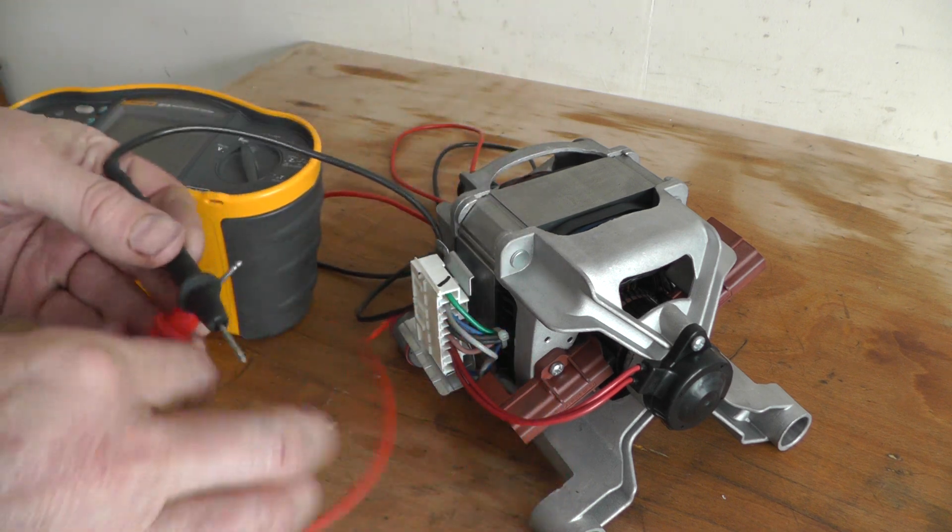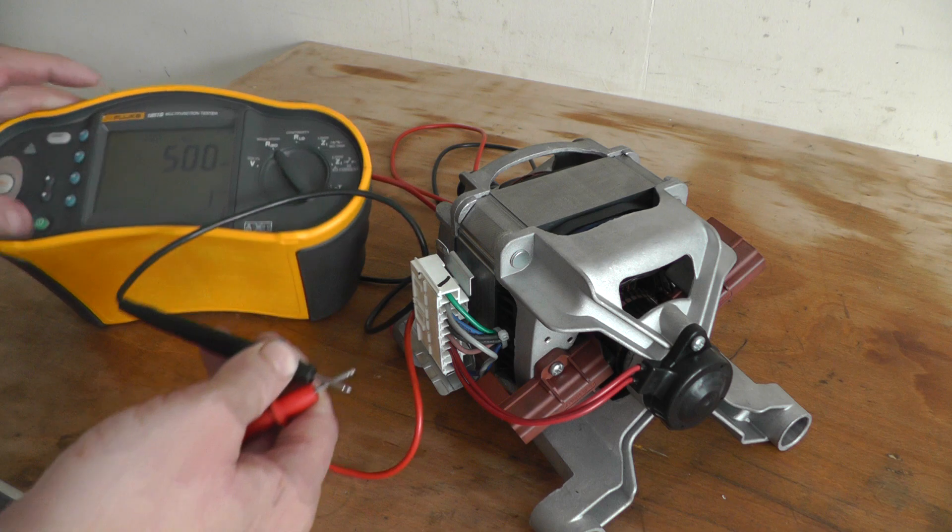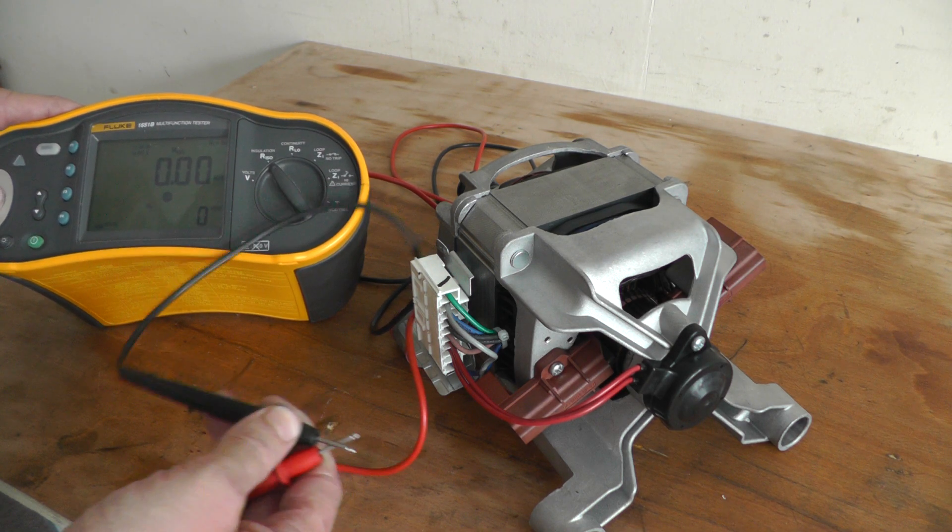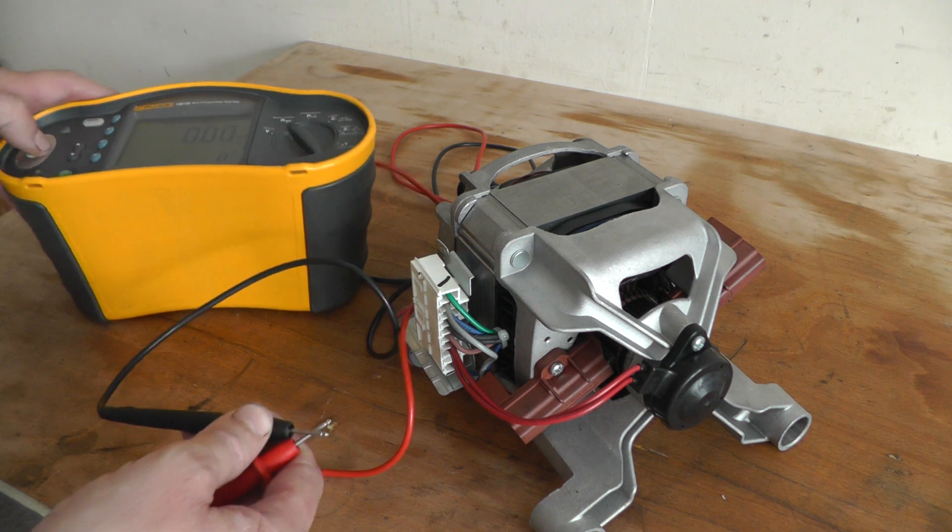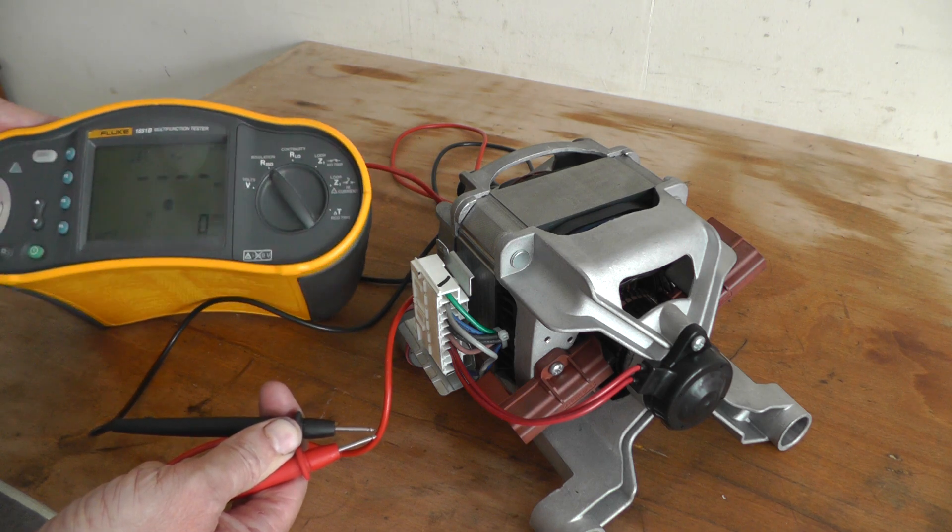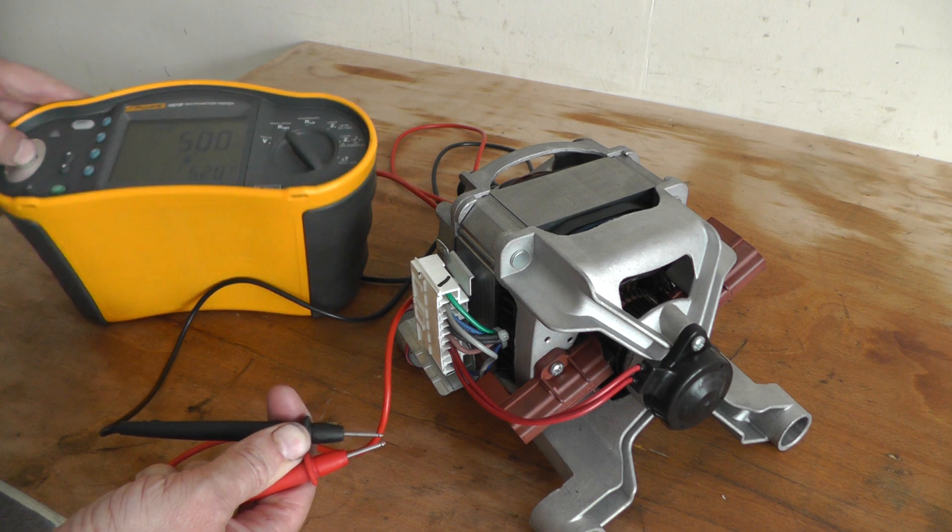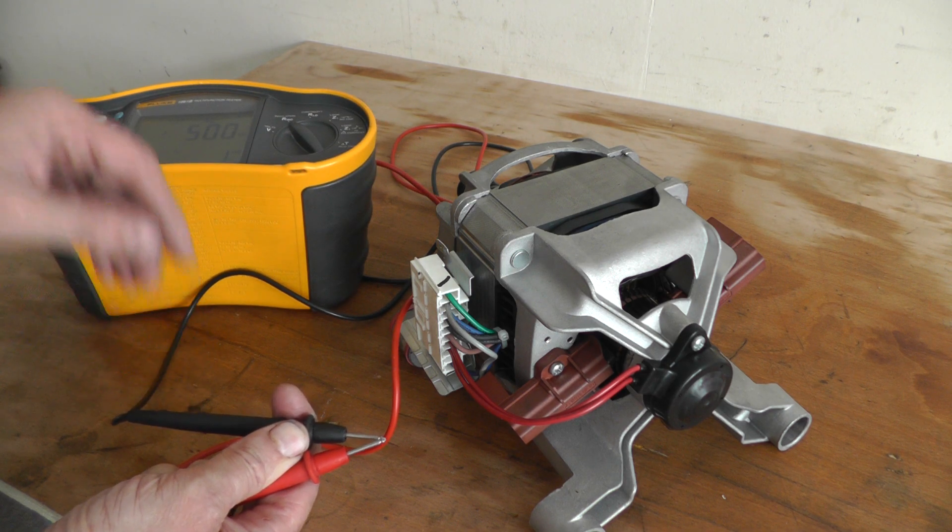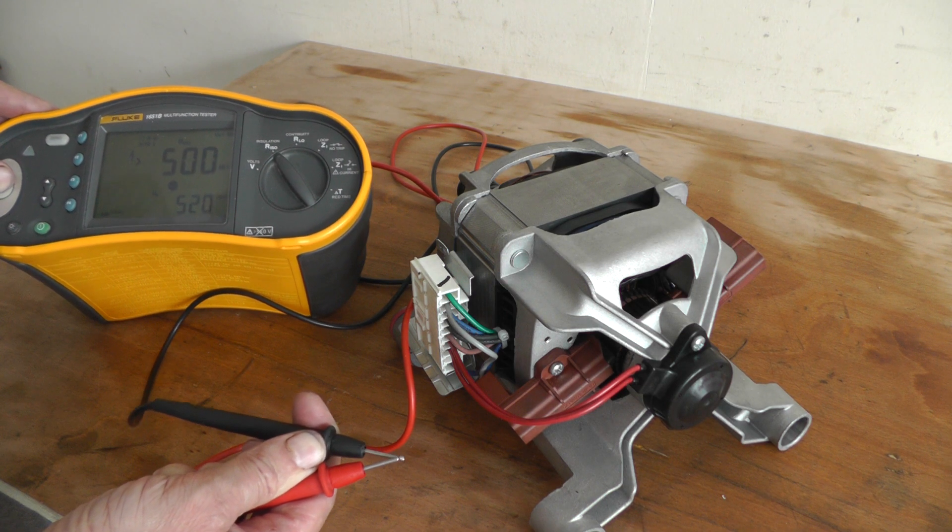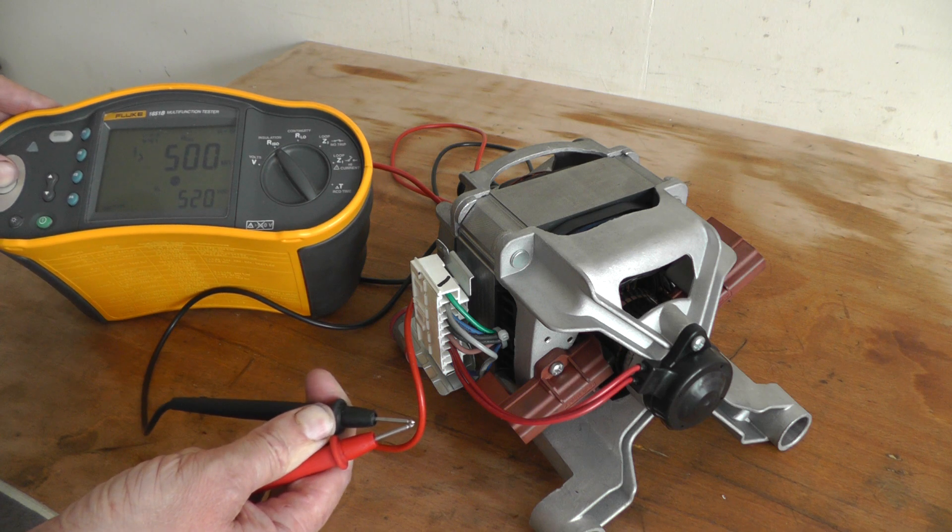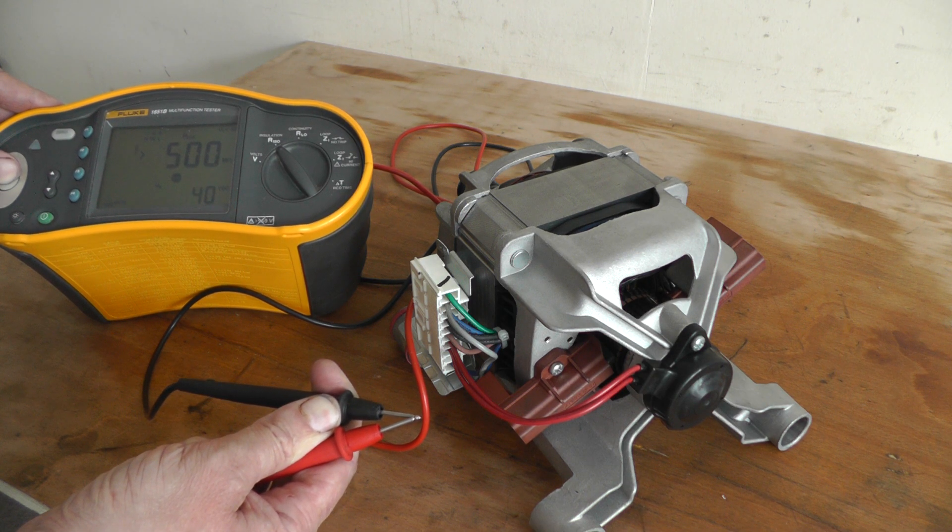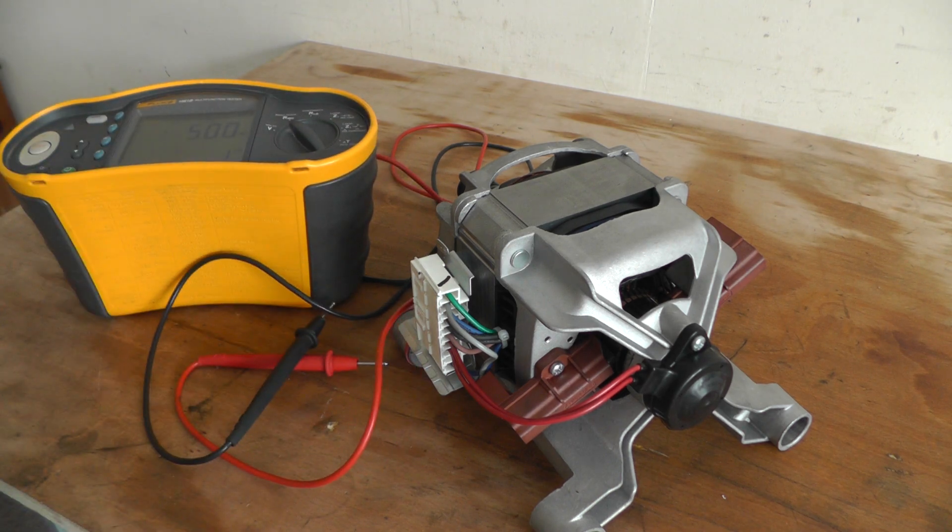I'll just short them leads out though and show you what a really bad short circuit would look like. Obviously you get no insulation resistance. I'll put them really close together. Still greater than 500. And well, that's how you test your motor anyway, alright.